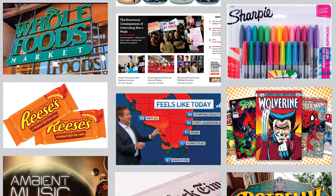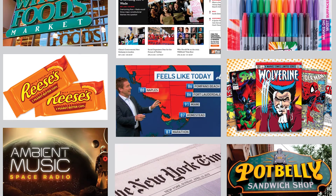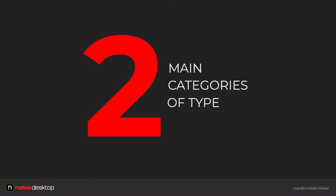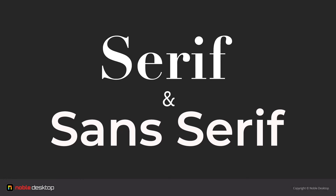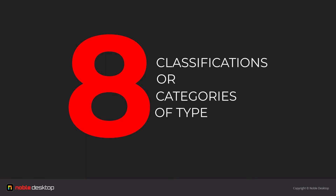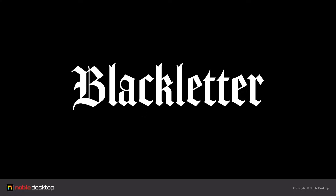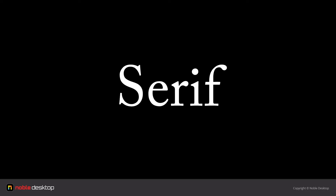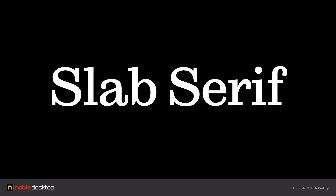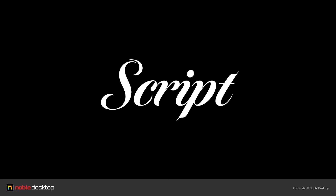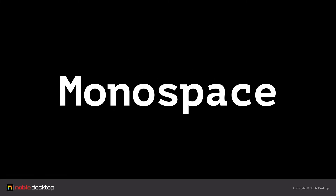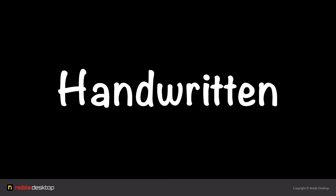So let's jump in here. It used to be said that there were two main categories of typefaces, these being serif and sans serif. However, these days we consider that there are actually eight different categories: black letter, serif, slab serif, sans serif, script, monospace, handwritten, and decorative.